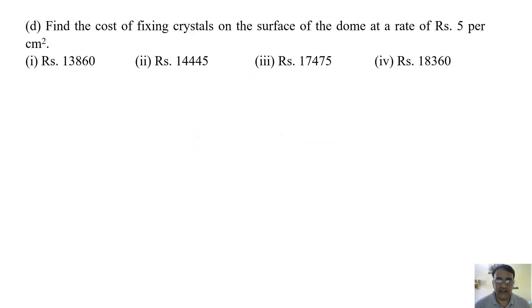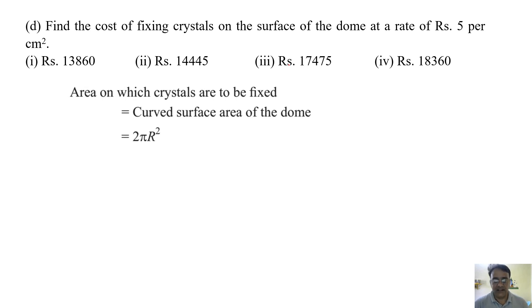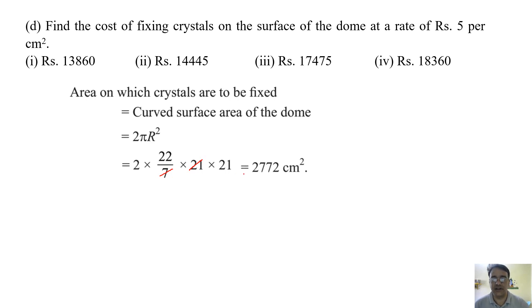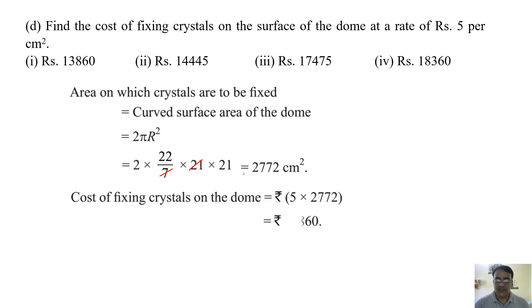Fourth question: find the cost of fixing crystals on the surface of the dome at a rate of rupees 5 per centimeter square. The dome's curved surface area = 2πr². With radius 21 centimeters: 2 × 22/7 × 21 × 21 = 44 × 21 × 3 = 2772 centimeter square. The cost of one centimeter square is rupees 5, so total cost = 5 × 2772 = 13,860 rupees. The correct option is the first one.